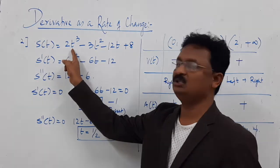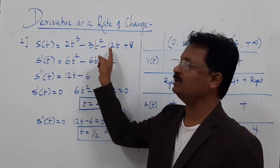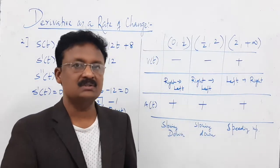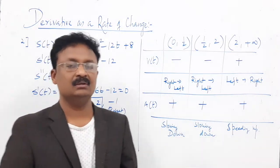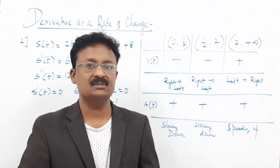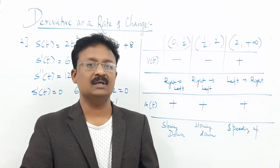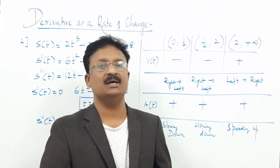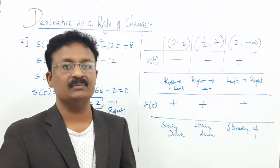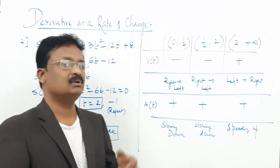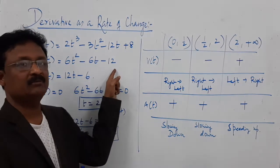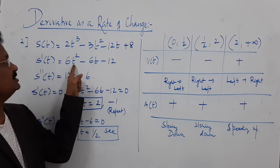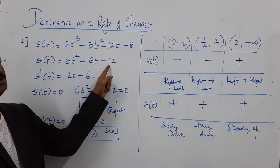Next example: s(t) = 2t³ − 3t² − 12t + 8. The question is to find the direction of movement and whether the particle is slowing down or speeding up during the given interval. To solve this, find s dash of t (velocity): differentiating gives 6t² − 6t − 12.